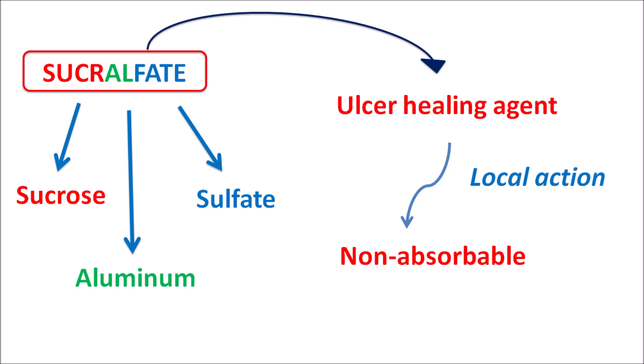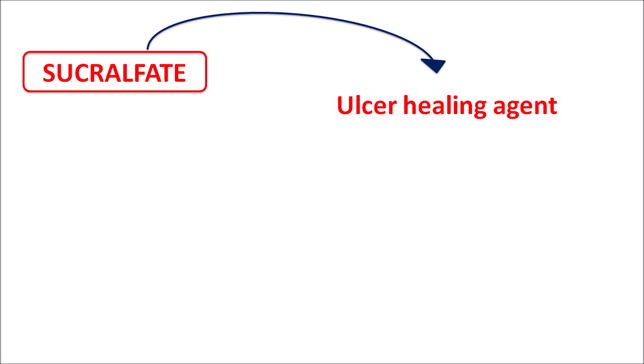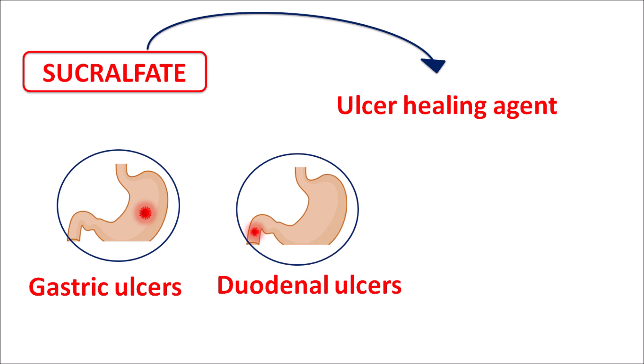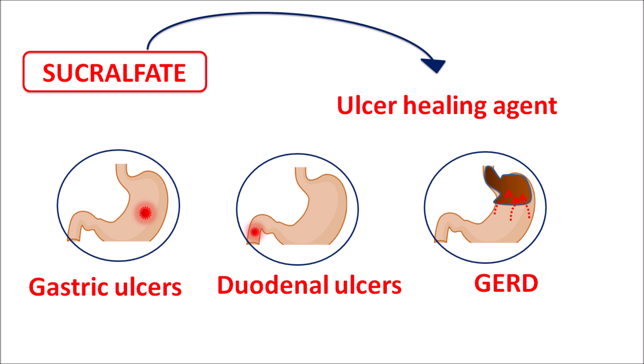Aluminium is present as aluminium hydroxide, which forms a complex with this sulphated sucrose. This drug is indicated for the treatment of gastric ulcers, duodenal ulcers, or conditions like GERD (gastroesophageal reflux disorder) and dyspepsia. In all these conditions sucralfate can be used, but its main indication is to control ulcer progression.